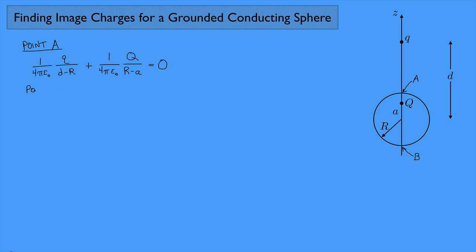Now let's look at point B at the opposite side of the sphere. Similarly, the potential at point B must be zero: (1/4πε₀) · q/(D+R) + (1/4πε₀) · Q/(R+a) = 0. The distance from little q to point B is D plus R, and the distance from big Q to point B is R plus a.